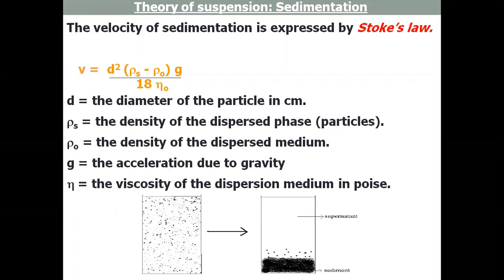It is directly proportional to the diameter squared (d²) of the particle in centimeters. It is also directly proportional to the density ρₛ of the dispersed phase (the particles) and ρₒ of the dispersion medium—the density. As the particles are under the influence of gravity, it is directly proportional to the acceleration due to gravity (g) divided by 18, and inversely proportional to η, the viscosity of the dispersion medium given in poise.